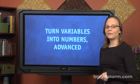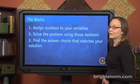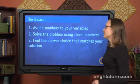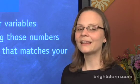First of all, let's start out with a recap of what the last episode was all about. Turning variables into numbers has three general steps. First, you assign numbers to your variables. Then, based on those numbers, you solve the problem. And lastly, you look for the match between your answer choices and the answer that you found.